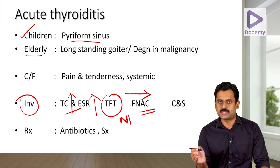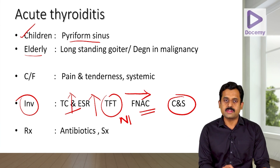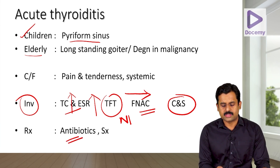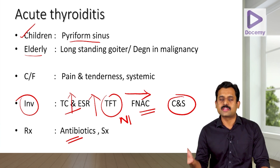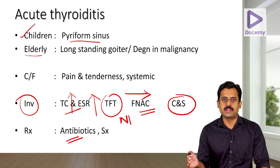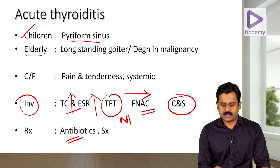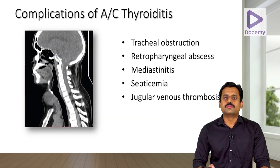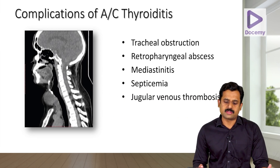If the patient has developed an abscess, drain it and do culture and sensitivity of the pus. For bacterial thyroiditis, start antibiotics along with NSAIDs for pain. If an abscess is present, drain it and proceed with surgery.